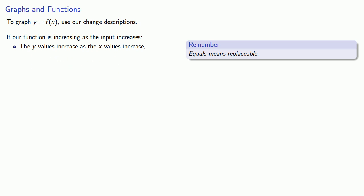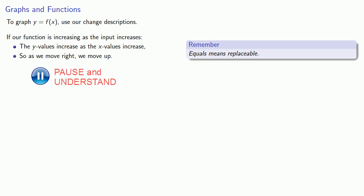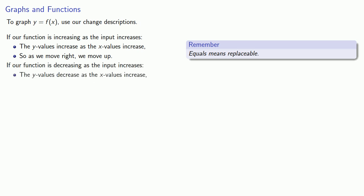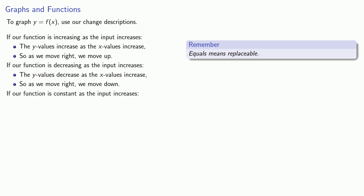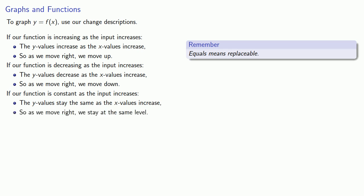The statement that our function is increasing as the input increases really means the y values increase as the x values increase. Increasing our x values moves us to the right, so as we move right, we move up. If our function is decreasing, as we move right, we move down. If our function is constant, as we move right, we stay at the same level.